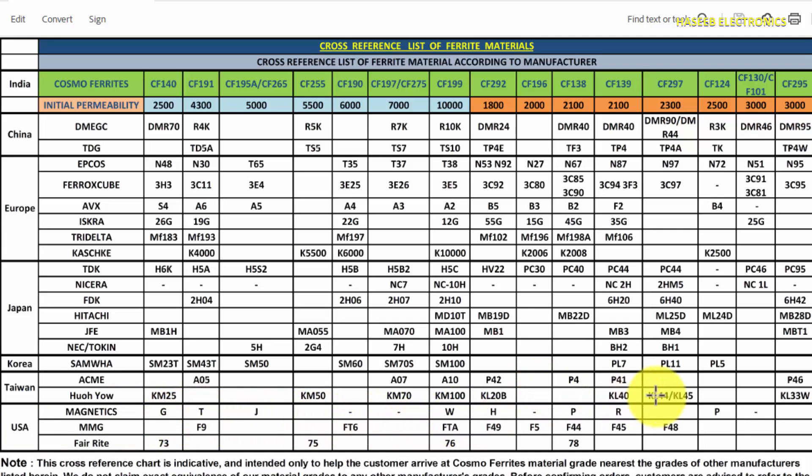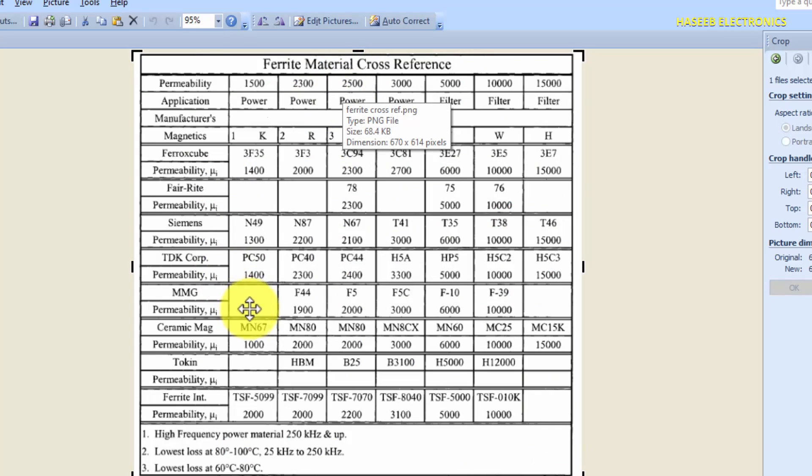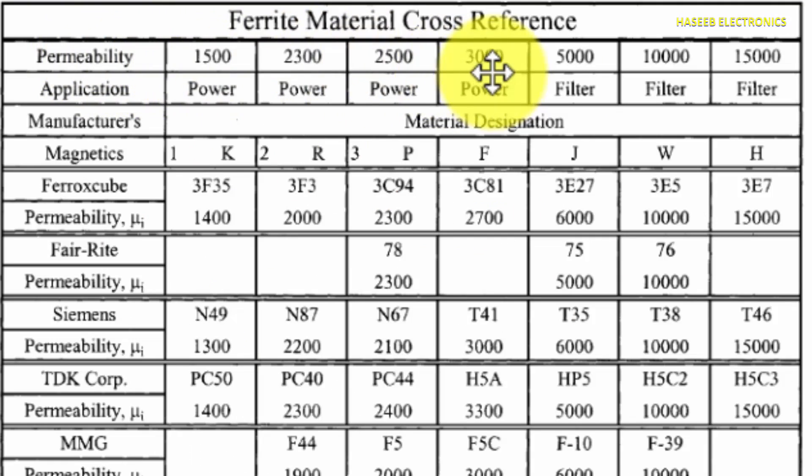If we see our material, it has permeability 2300. And if we check this cross-reference table, in the top side it is permeability 1500, 2300, 2500. And if we check Magnetics Incorporation, it has our material under this column 2300.